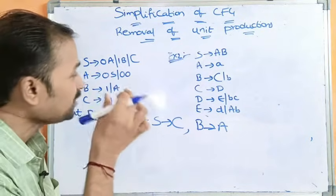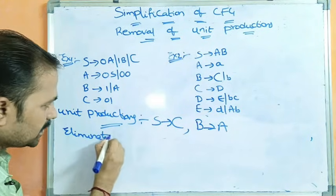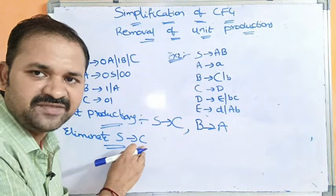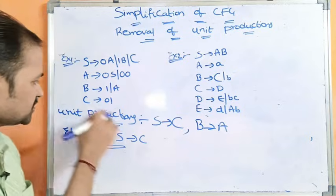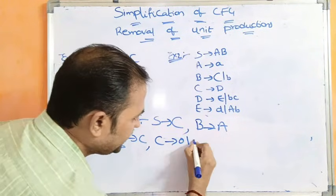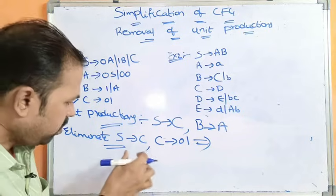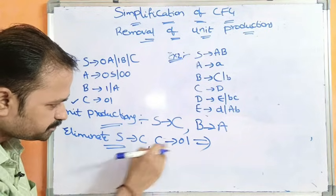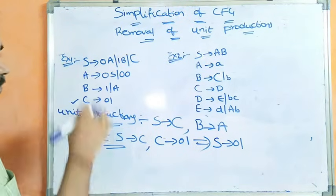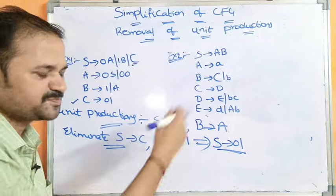Our target is to eliminate these two unit productions. First, let us eliminate S produces C. To eliminate S produces C, we need to find a production that starts with C. We have C produces 01. Using the rule that A produces B and B produces X1 X2 ... Xn gives us A produces X1 X2 ... Xn, we replace S produces C with S produces 0, 1.